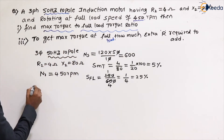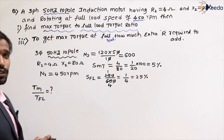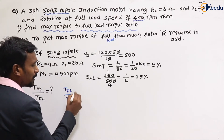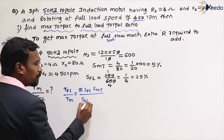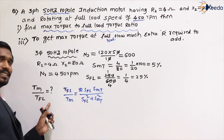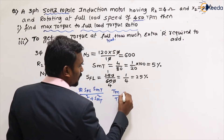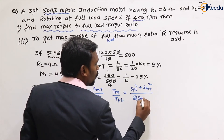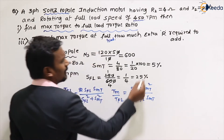Now they are asking the maximum torque to full load torque ratio — a tricky question. You know the full load torque to maximum torque ratio formula, but they asked it in reverse, so be careful. The maximum torque to full load torque ratio equals: (s_FL² + s_mt²) / (2 × s_FL × s_mt).